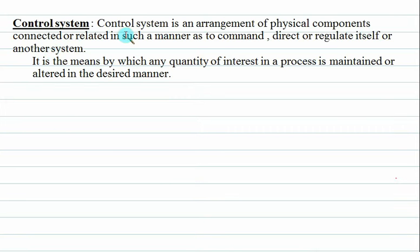The control system is an arrangement of physical components conducted or related in such a manner as to command, direct, or regulate itself or another system. It is also defined as the means by which any quantity of interest in a process is maintained or altered in the desired manner.